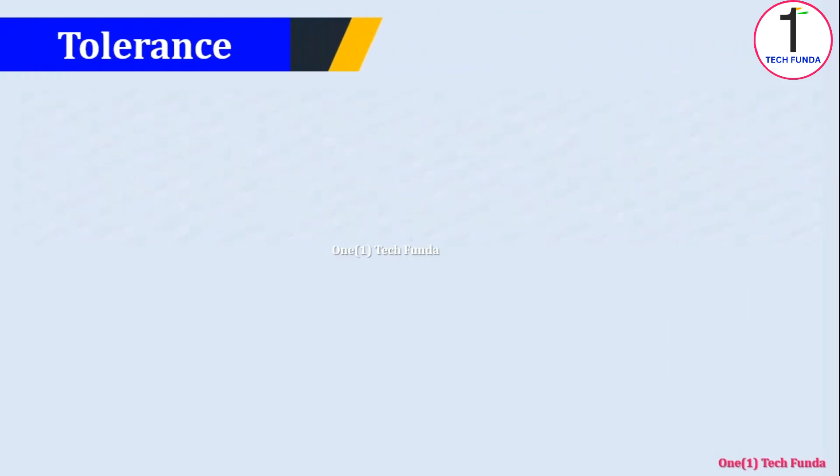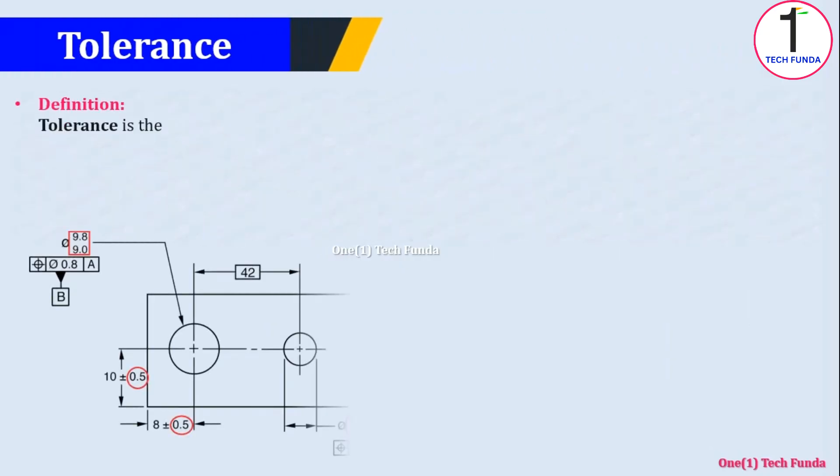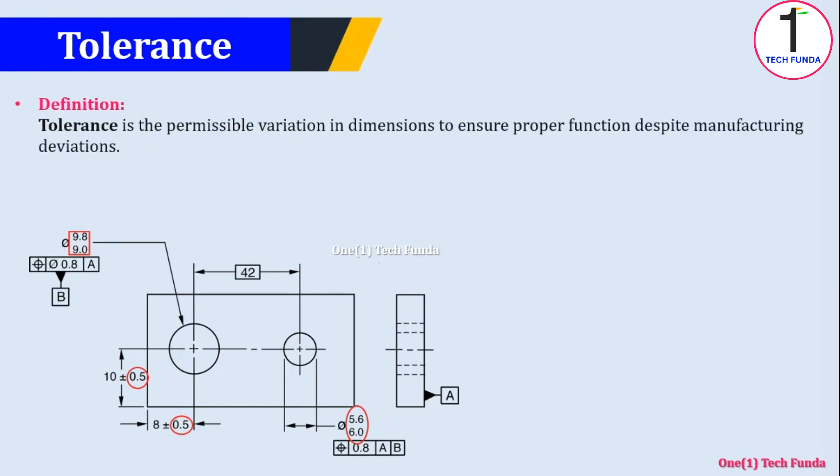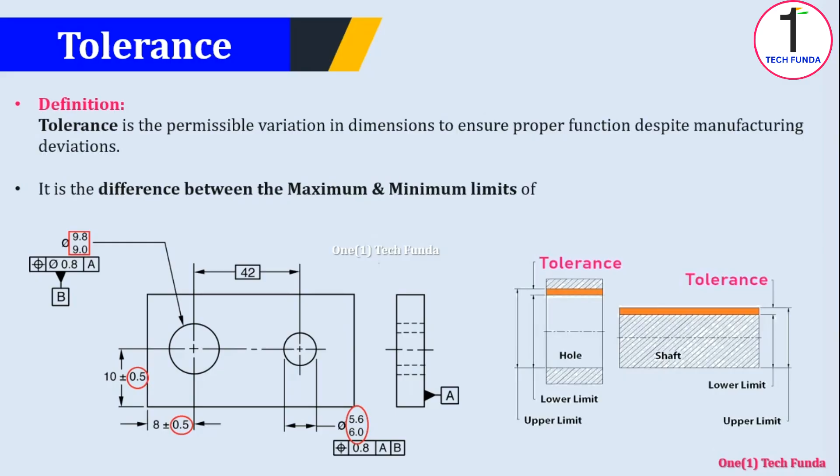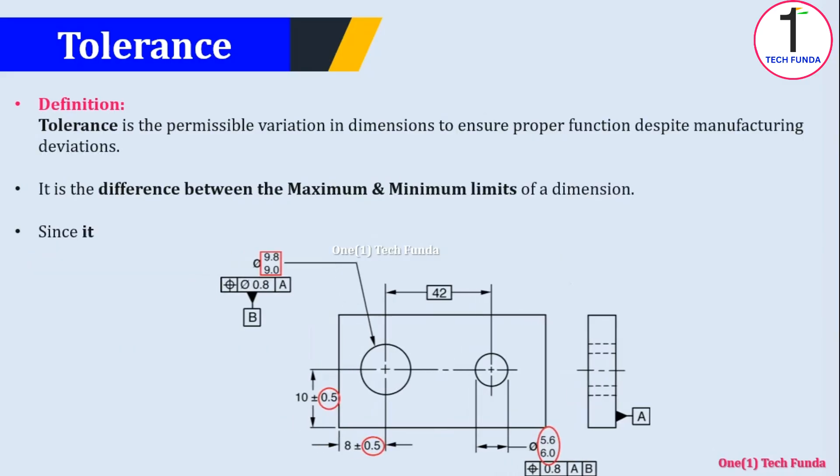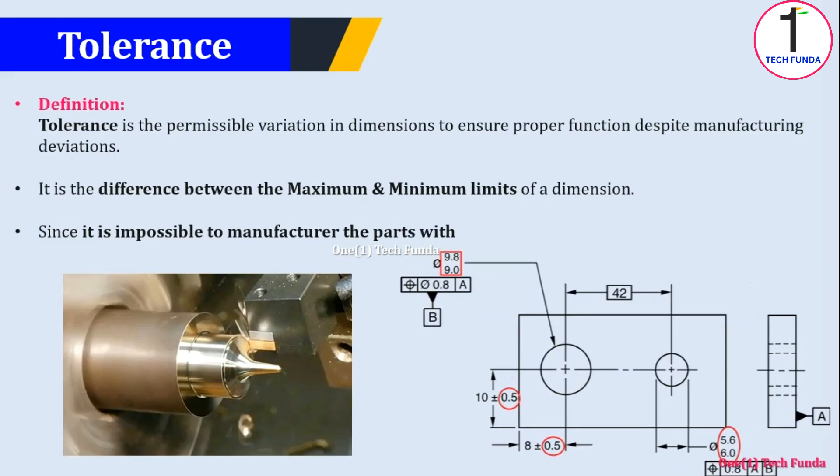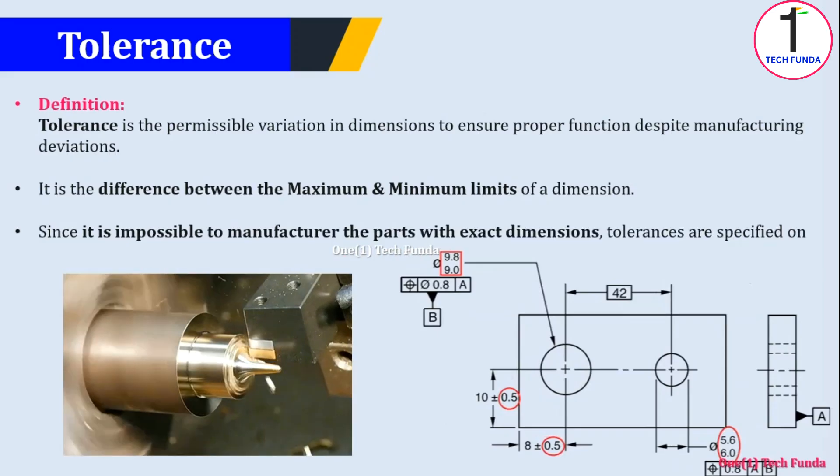Now we will see what is tolerance. Tolerance is the permissible variation in dimensions to ensure proper function despite manufacturing deviations. It is the difference between the maximum and minimum limits of a dimension. Since it is impossible to manufacture the parts with exact dimensions, tolerances are specified on drawings to control the parts.